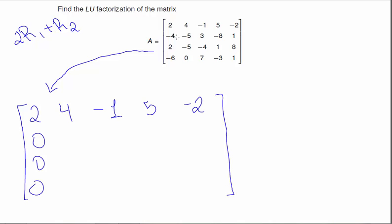So 4 minus 4 is 0. 8 minus 5 is 3. 2 plus 3 is 5. Sorry, minus 2 plus 3 is 1. Fix that. 10 minus 8 is 2. And then negative 4 plus 1 is negative 3.